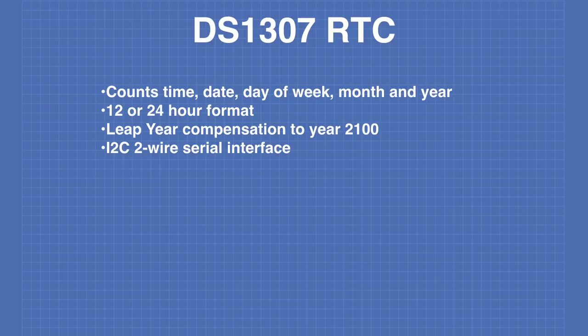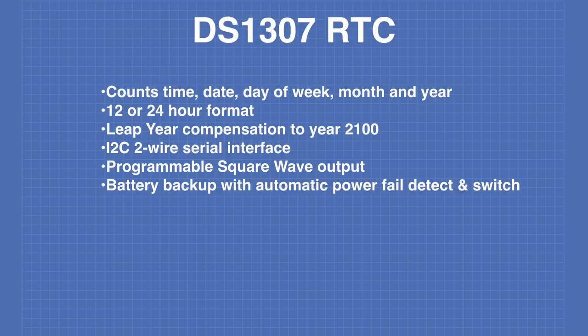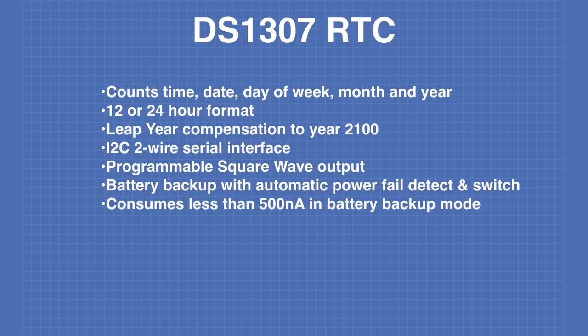The DS1307 uses an I2C two-wire serial interface. In addition to its clock functions, it also has a programmable square wave output. The device has battery backup with automatic power failure detect and switchover. In battery backup mode, it consumes less than 500 nanoamperes for very long battery life.